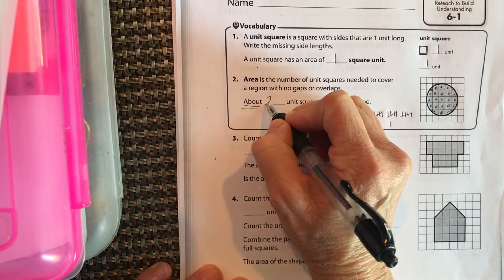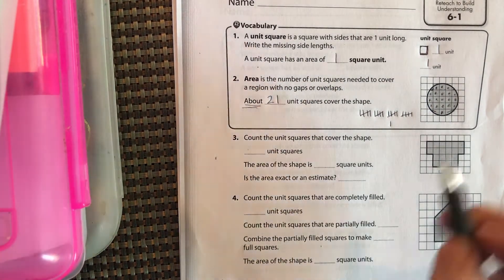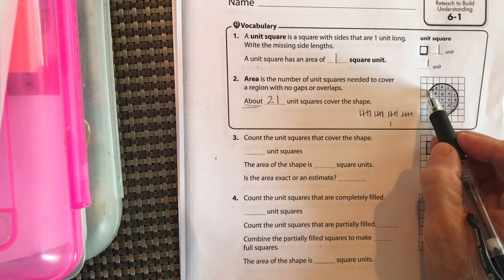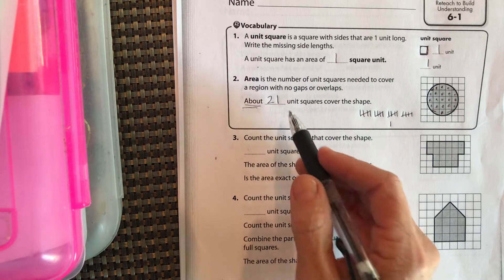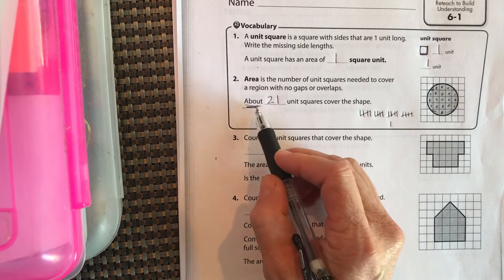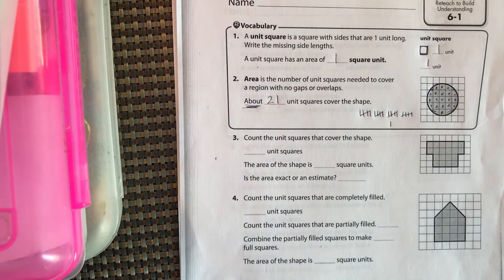So I would say about 21 square units cover the shape. It's a teeny bit less than that because some of these are missing little corners. Like it might end up being about 20. But if we're saying about, there's not any difference than about 20 or about 21 as far as filling in this area.